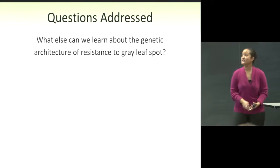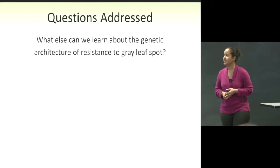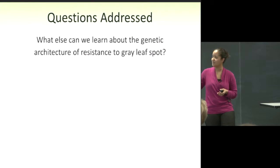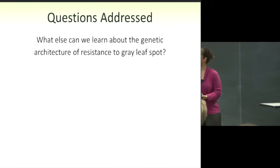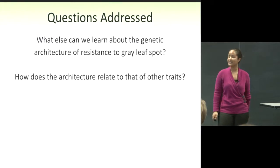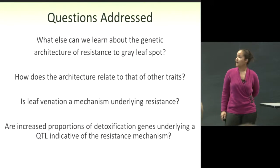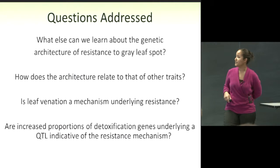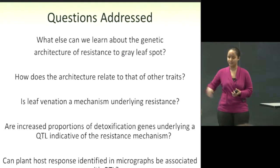I wrote a list of questions addressed throughout my dissertation. What else can we learn about the genetic architecture of resistance to gray leaf spot? How does this architecture relate to that of other traits? Is leaf venation a mechanism underlying resistance? Are increased proportions of detoxification-related genes underlying a QTL indicative of the resistance mechanism? And can host plant response identified in micrographs be associated with QTL? I'll provide a summary at the end.